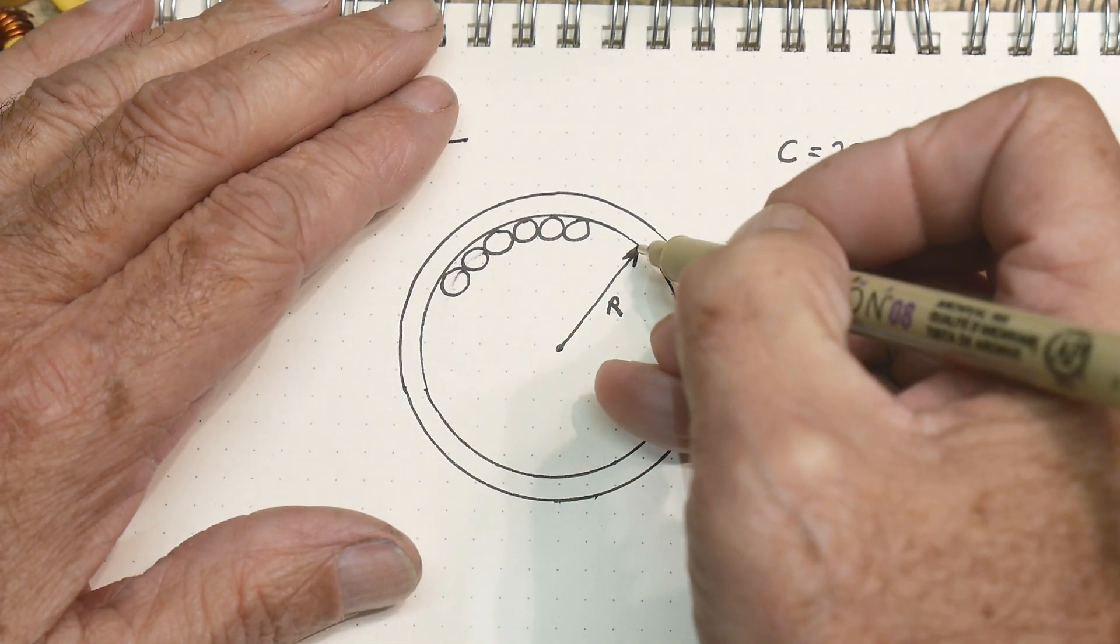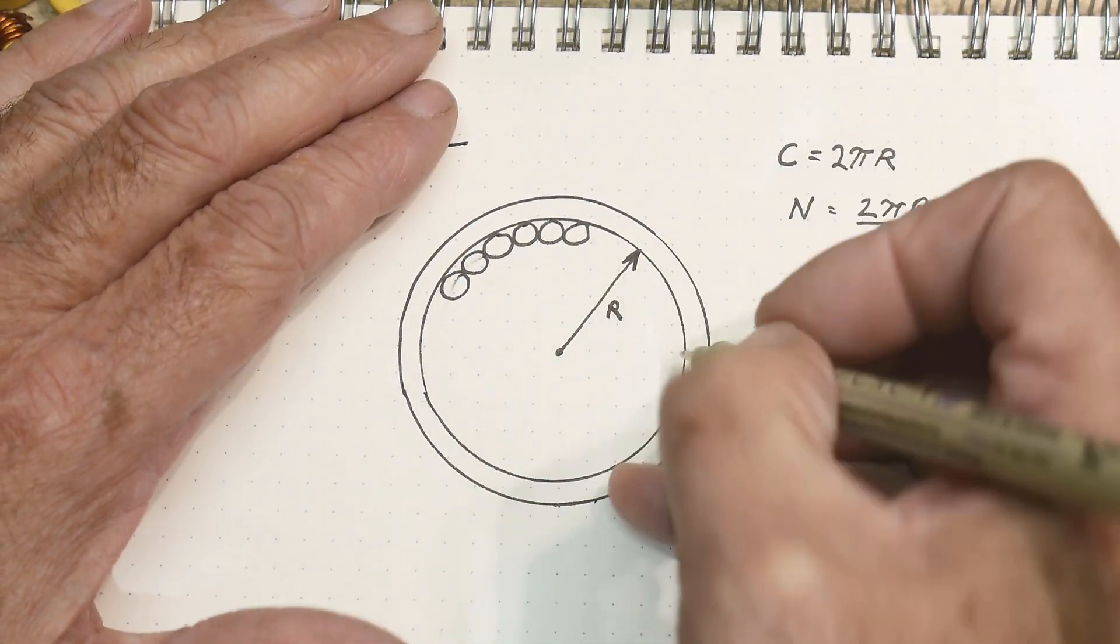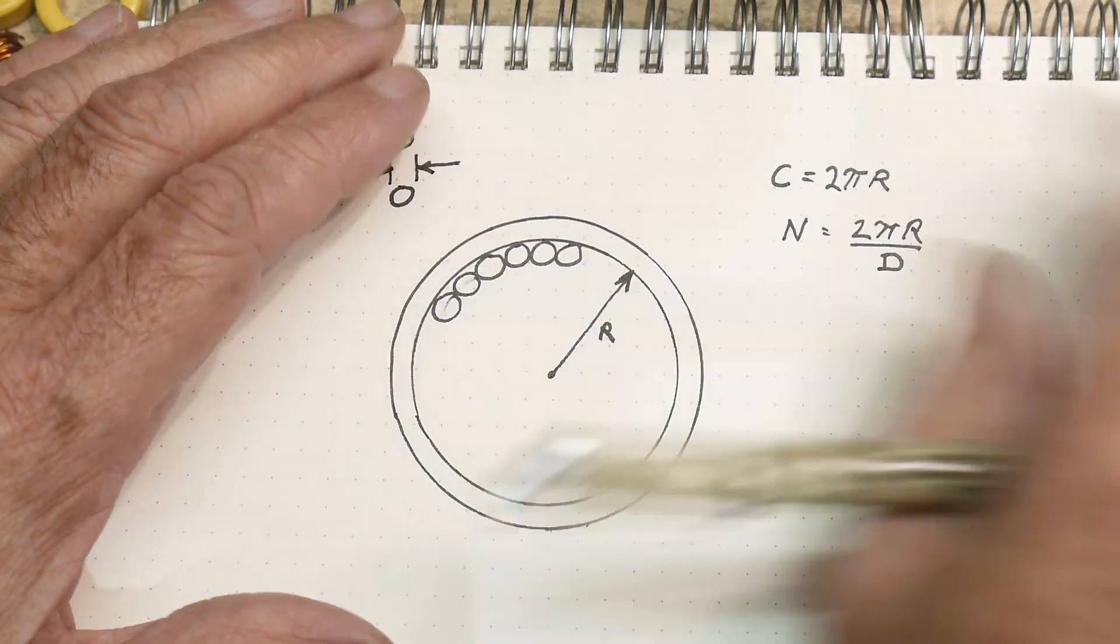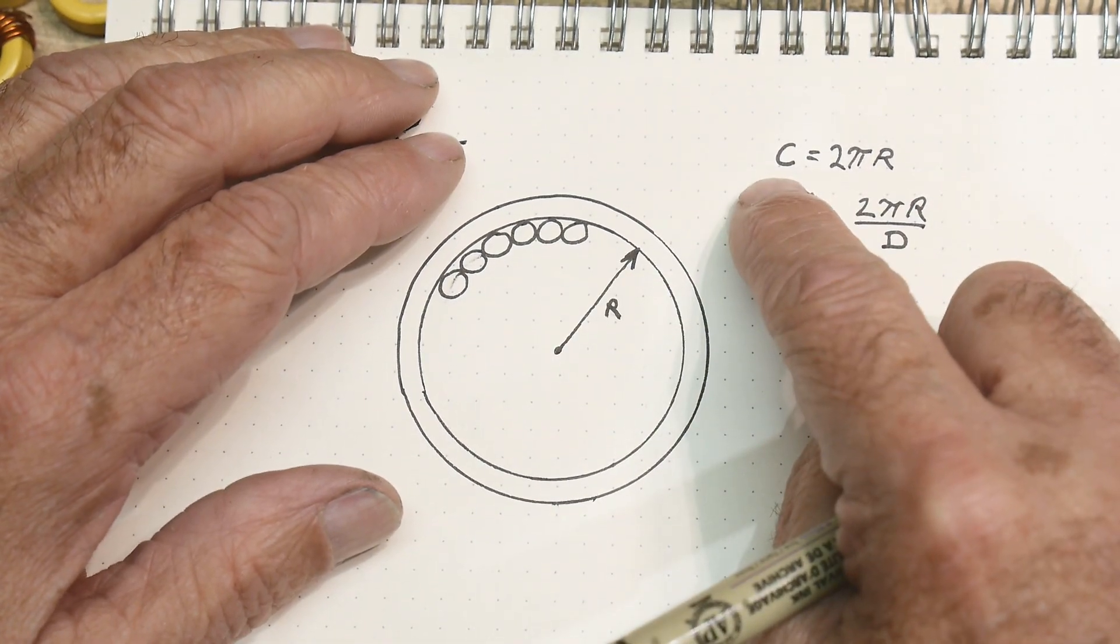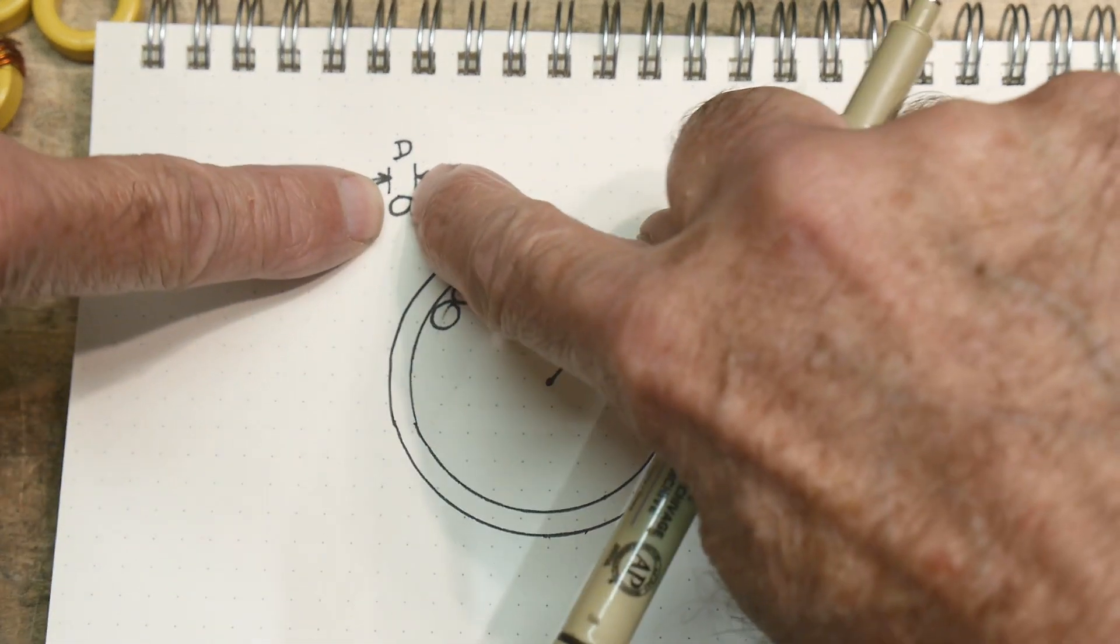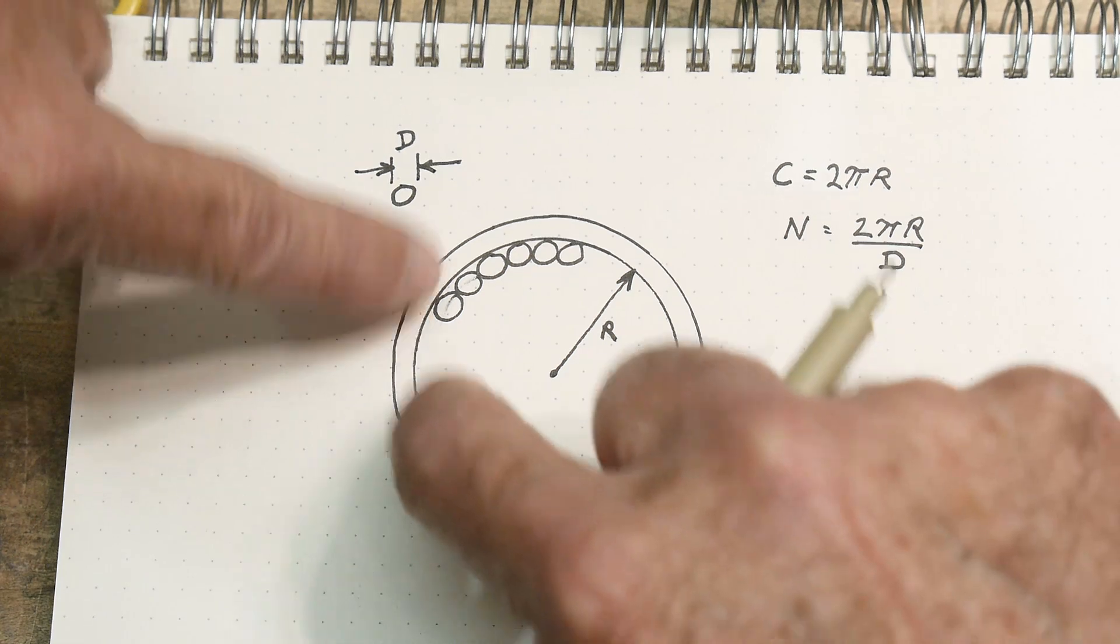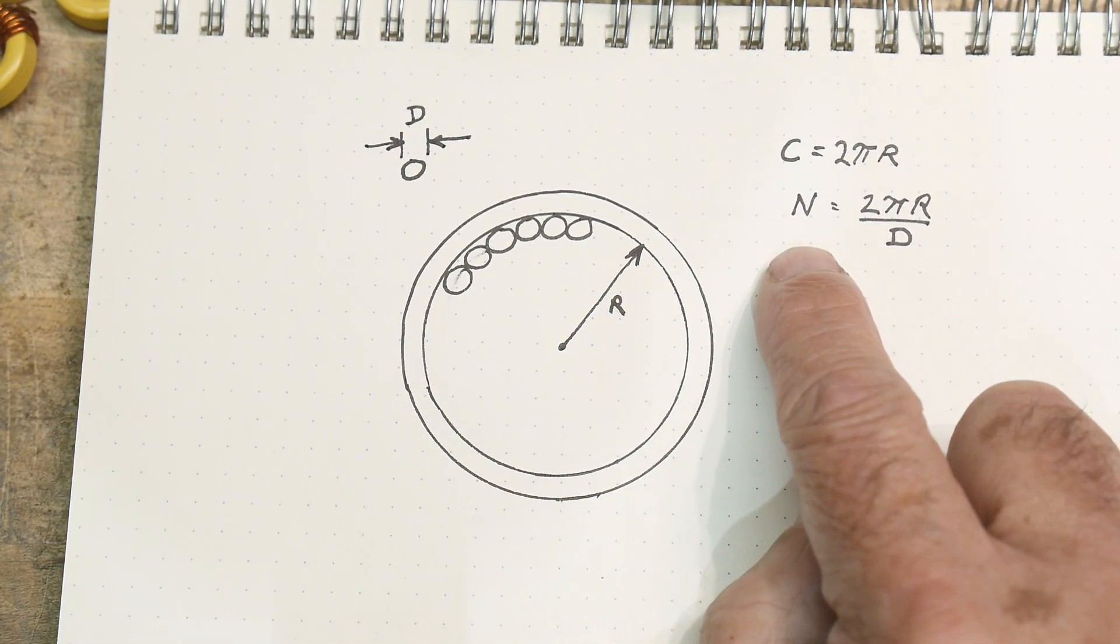Well, we do know the inside radius or inside diameter of the toroid. And so we can figure out the inside circumference. The circumference is 2πr. So if we know r, we know the circumference, 2πr. And if we know the diameter of a wire, then we can count how many diameters go around the circumference. And that would be 2πr divided by d. And that would give you a number.